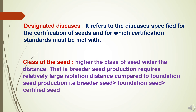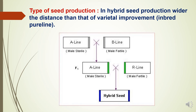Regarding class of seed: the higher the class of seed, the wider the distance. Breeder seed production requires a relatively large isolation distance compared to foundation seed production, and foundation seed requires greater distance than certified seed. The seventh factor is type of seed production: in hybrid seed production, wider distance is needed than for varietal improvement. In hybrid seed production we use three lines — A line, B line, and R line. After crossing A and B lines we get the female which is male sterile. This A-line male sterile is crossed with the R line, which is the male restorer line, and the produce is hybrid seed F1. In this case we have to maintain a higher isolation distance to avoid contamination.